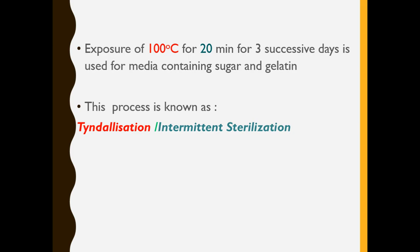Like the earlier method we have seen, temperature below 100 degree centigrade, that was the method known as inspissation, where 80 to 85 degree centigrade temperature is used, also for 3 successive days. The principle of both Tyndallization and inspissation is the same — it only varies in the temperature used. In inspissation, we use 80 to 85 degree centigrade for 30 minutes for 3 successive days; here we use 100 degree centigrade for 20 minutes for 3 successive days. The first exposure kills all the vegetative forms. Between exposures, the media is incubated to convert spores into vegetative forms, and they are killed on the second exposure. The final exposure kills any remaining organisms. That is why this method is referred to as intermittent sterilization.